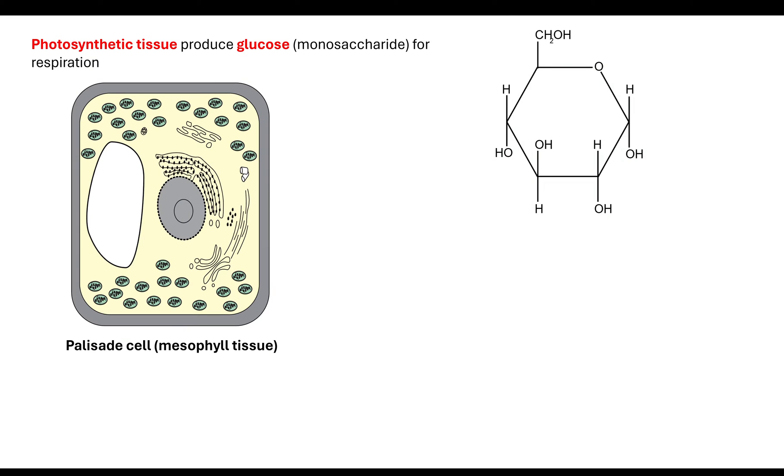Before I can talk about that, I want to take you back to module 2 and discuss photosynthetic tissue and the fact that it produces monosaccharides such as glucose. You need to know the differentiation of the cell, specifically the palisade cell, which makes up the mesophyll, which is the tissue within the plant leaf.